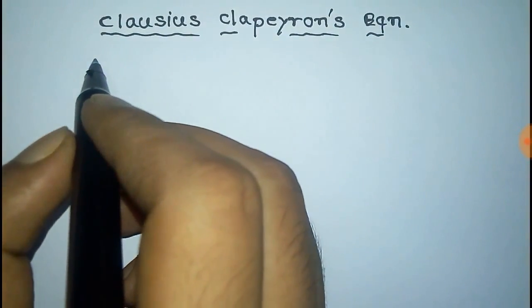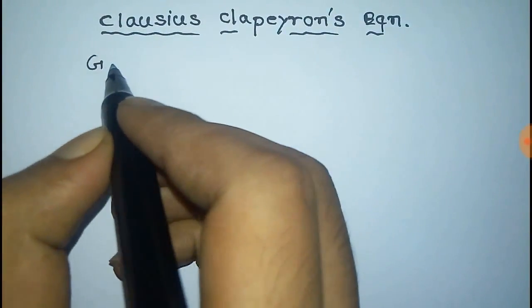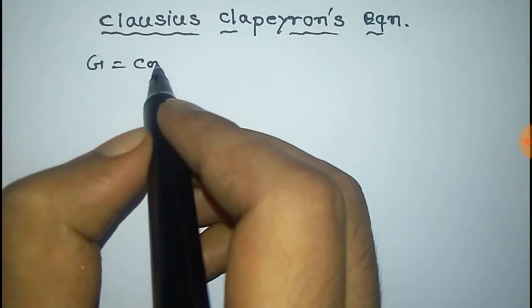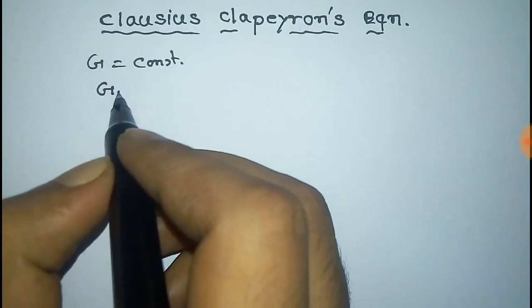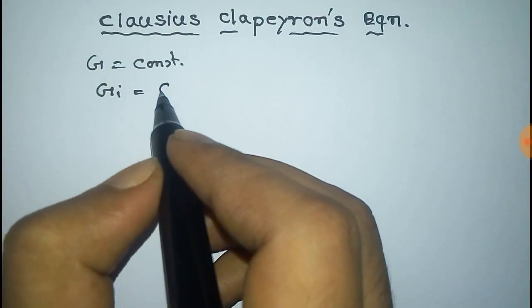For first order phase transition, the Gibbs free energy is constant. So the initial Gibbs free energy Gi is equal to the final Gibbs free energy Gf.